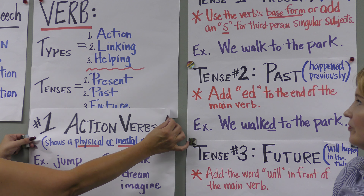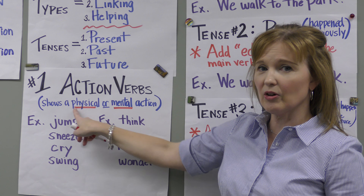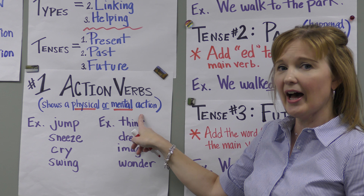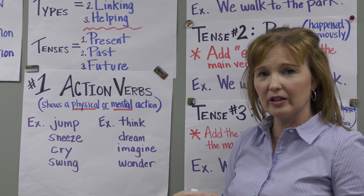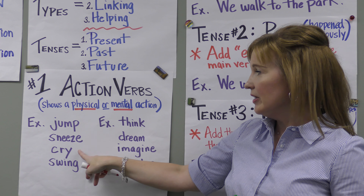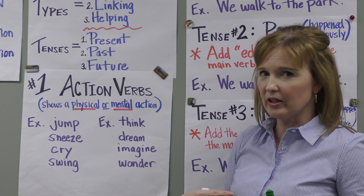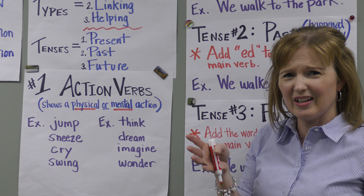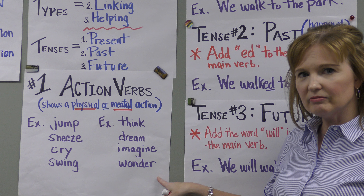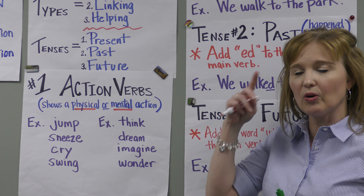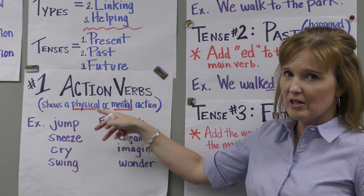Let's start with action. An action verb shows either a physical or a mental action — physical or mental. Physical action is something you do with your body. So I have these verbs: jump, sneeze, cry, swing — like you swing a bat. Those are all things you do with your body. But there are also lots of things you do with your mind that you just can't see usually. Think, dream, imagine, wonder, investigate. So many things go on in your mind. Those are mental actions. Just because you can't see it doesn't mean it can't be an action verb.